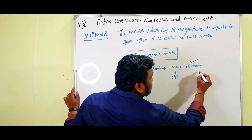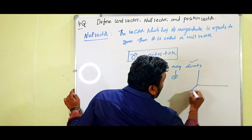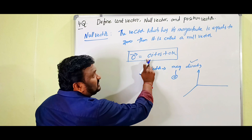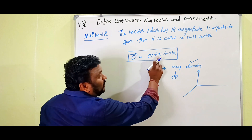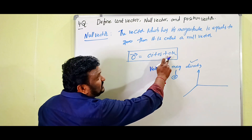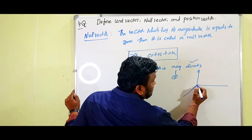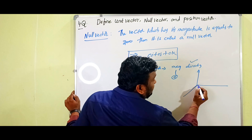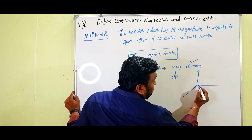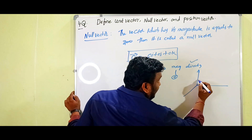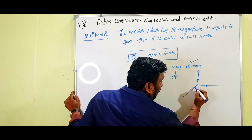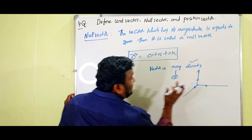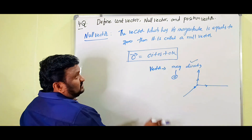Why does a null vector have direction? Because here the x-component is 0, y-component is 0, z-component is 0 — this is the origin. We take the null vector at the origin, but we can take it in any direction from the origin. That is why a null vector has direction.